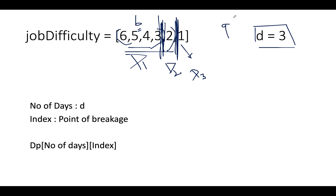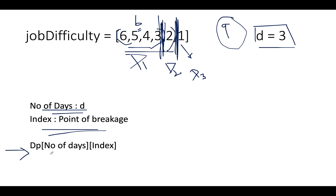The takeaway from this analysis: there are two variable parameters for the DP array. The first is the number of days currently being considered, and the second is the index representing the breakage point in the array. So the DP array will have two indexes: number of days and the current index position.